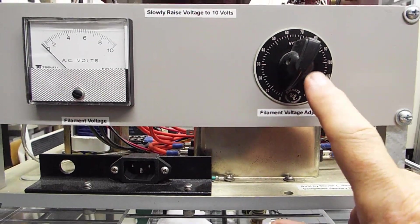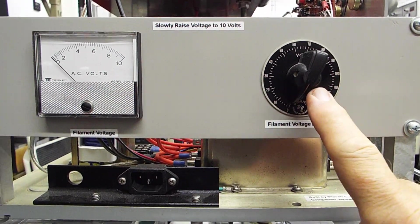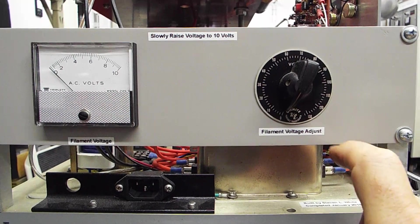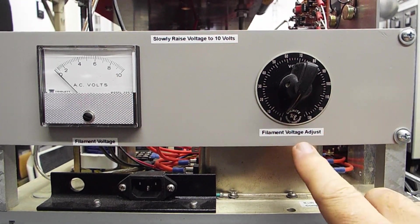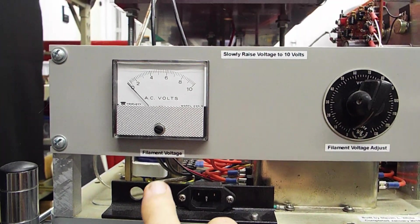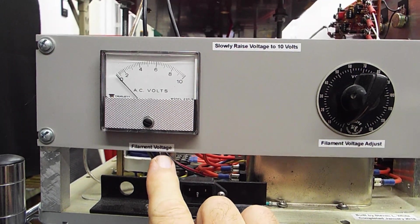This is a small variac that controls the voltage to the filament. And this shows you what the voltage on the filament is.